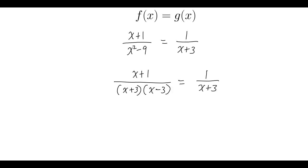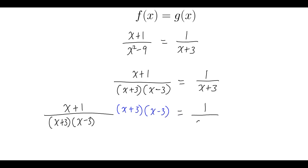So x plus 1 over x plus 3, x minus 3, times x plus 3, x minus 3, equals 1 over x plus 3, times x plus 3, x minus 3. I multiplied both sides by the common denominator.